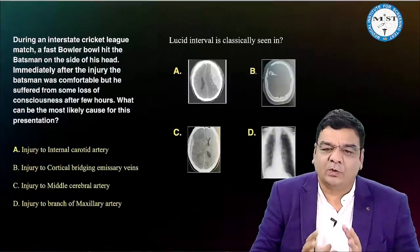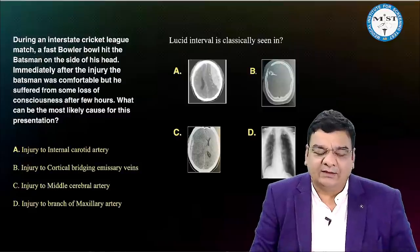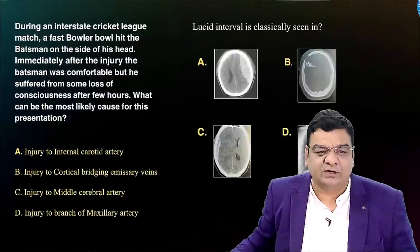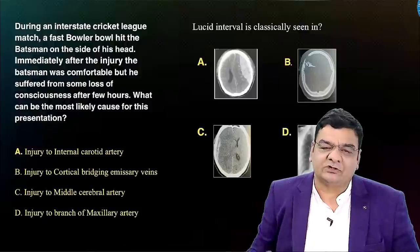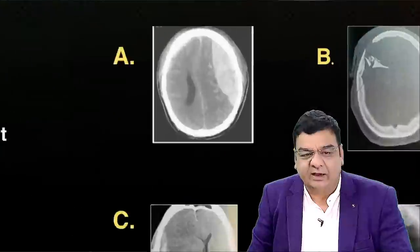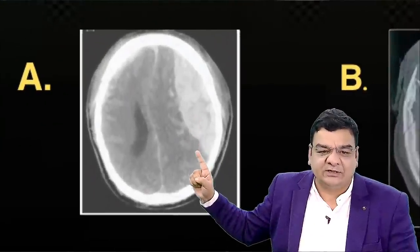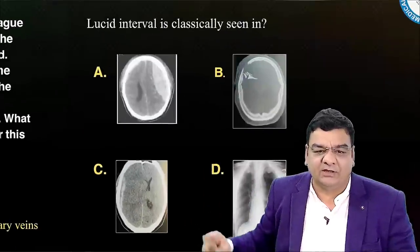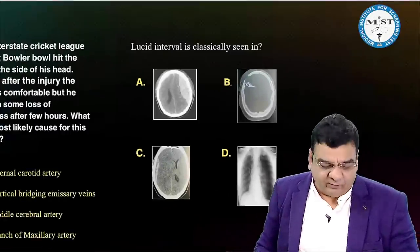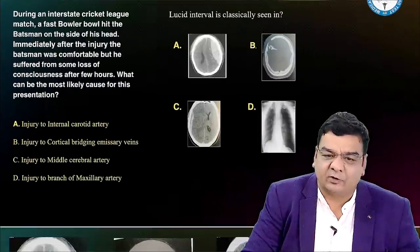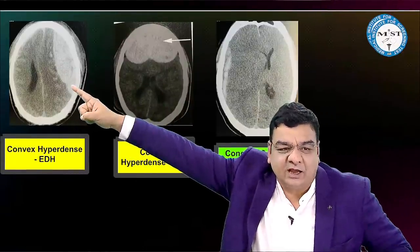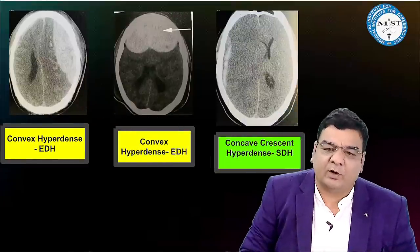Another hot topic in trauma is extradural hematomas and the lucid interval. The examiner may give a clinical situation related to a lucid interval and ask which vessel is involved. We know that in extradural hematoma, it is the middle meningeal artery — a branch of the maxillary artery. There may also be an image-based question: hyperdense convex is seen in extradural, hyperdense concave in subdural hematomas. The first image-based question in FMG history in 2015 was an extradural hematoma image, and it has been repeated often.